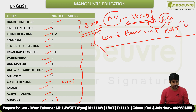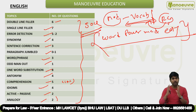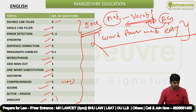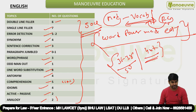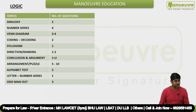If you have prepared well for the English section, comfortably your score will be 36 to 38 out of 50. I won't be surprised if someone hits 40 plus because the section was easy and scoring.